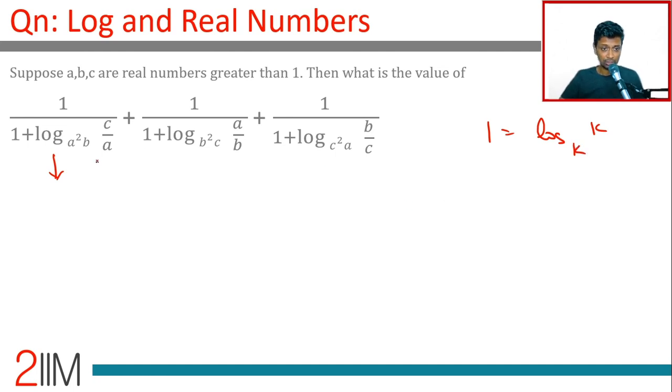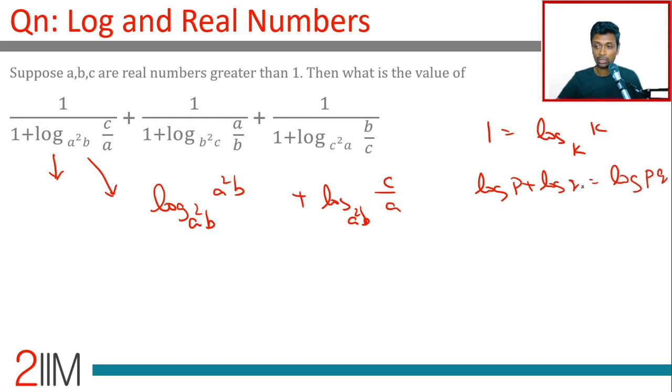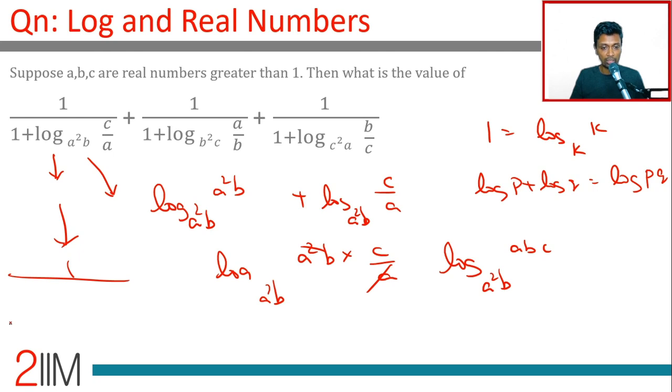We will take only one expression - this one - the denominator alone. Write it as log a²b to the base a²b. That is 1 plus log c/a to the base a²b. Now we know log p plus log q is log of pq. This is log to the base a²b: a²b times c/a, or this is log abc to the base a²b.